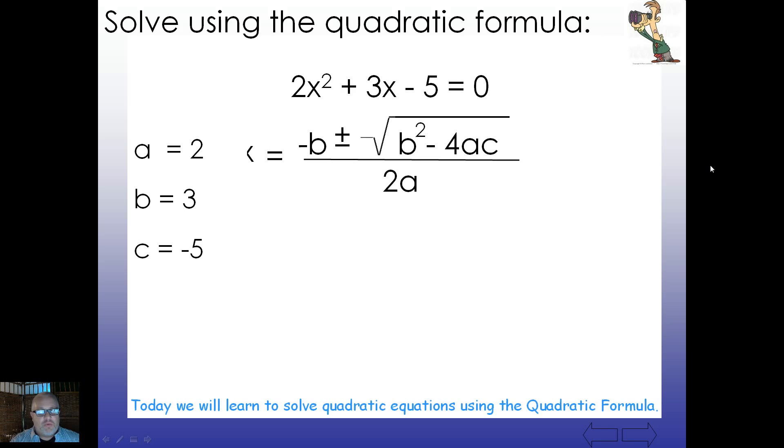If we take this and we plug it into our formula, we're just going to take whatever value it is for b and plug in a 3, and whatever value it is for a, plug in a 2, and whatever value it is for c and plug in a negative 5.